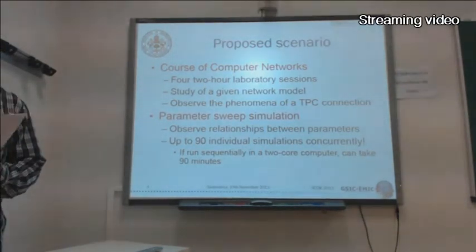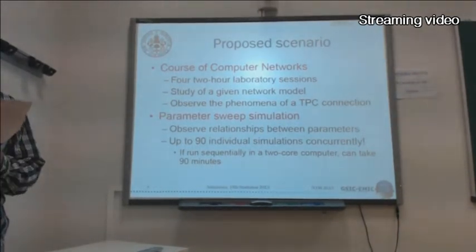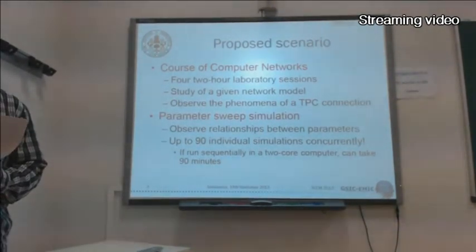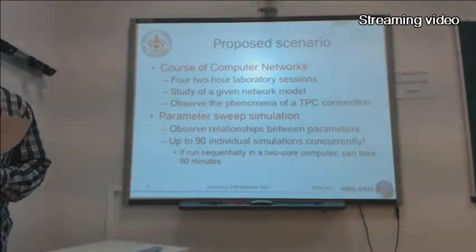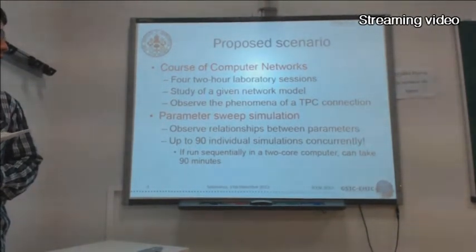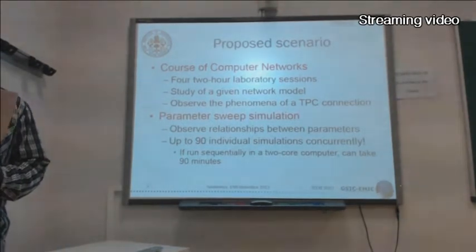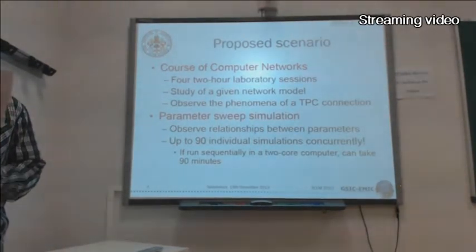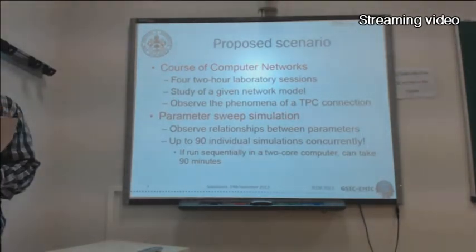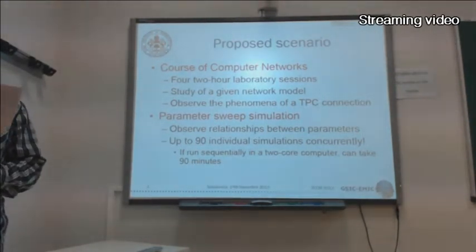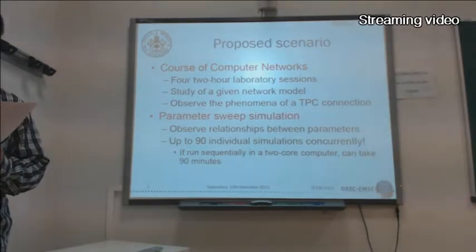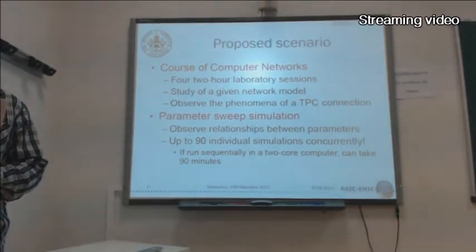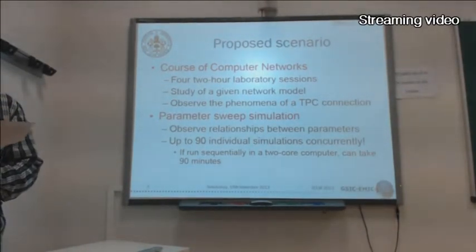This model performs a parameter suite exploring a range of values for significant parameters. For example, in a combination of 15 values for a relay parameter and 6 values for a bit frame, it is required to run 90 individual simulations. In a traditional computer laboratory, these individual simulations should be run concurrently, and in the case of a two-core processor — as in our lab computers — the estimated running time can take 90 minutes.